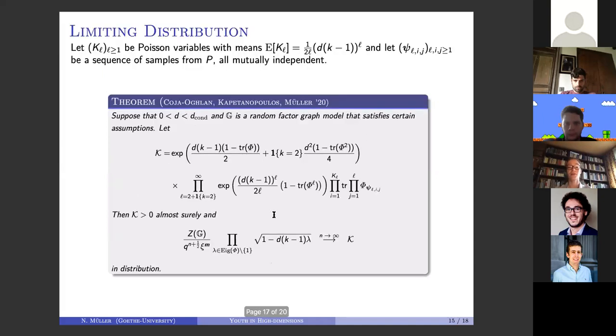The main result of the paper is maybe interesting because, to my knowledge, it has no physics prediction match. It is the determination of this normalization of the partition function, and it converges in distribution to this random variable here, which comes out of a subgraph conditioning technique.